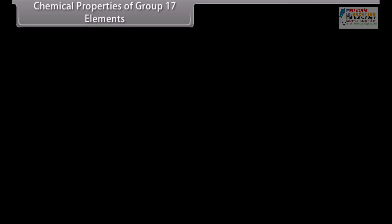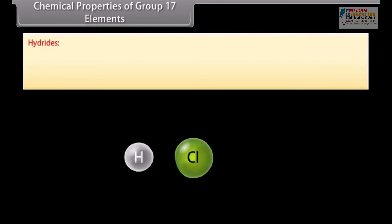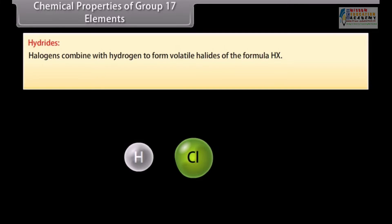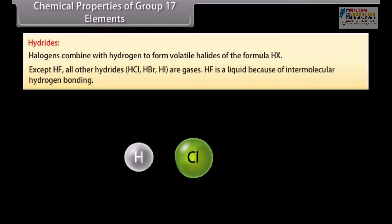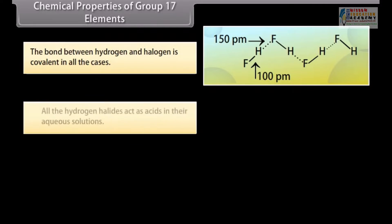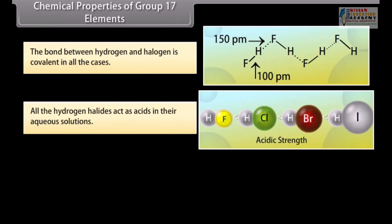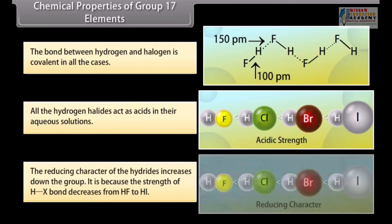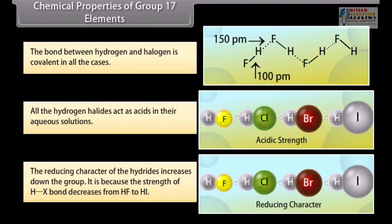Halogens combine with hydrogen to form volatile hydrides of the formula HX. Except HF, all other hydrides HCl, HBr, HI are gases. HF is a liquid because of intermolecular hydrogen bonding. The bond between hydrogen and halogen is covalent in all cases. All hydrogen halides act as acids in their aqueous solutions, ionizing to give H⁺ and halide ion X⁻. The reducing character of the hydrides increases down the group because the strength of the H–X bond decreases from HF to HI.